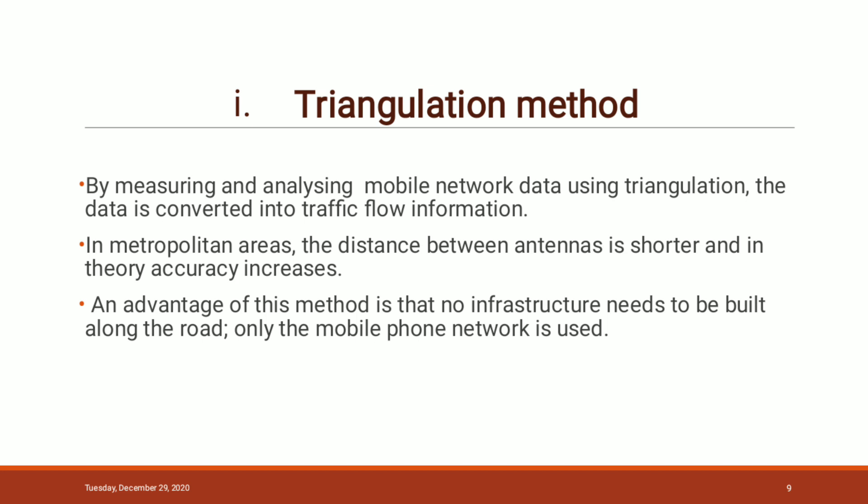The first one is the triangulation method. In this method, mobile phones are used as anonymous traffic probes. As a car moves, so does the signal of any mobile phone inside the vehicle. By measuring and analyzing network data using triangulation, data is converted into traffic flow information. In a metropolitan area, the distance between antennas is shorter and in theory, accuracy increases. The advantage of this method is that no infrastructure needs to be built along the road — only the mobile phone network is used.